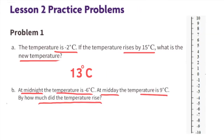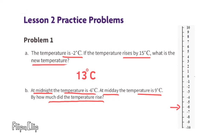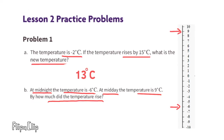Problem 1b: at midnight the temperature is negative 6 degrees Celsius; at midday the temperature is 9 degrees Celsius. By how much did the temperature rise? The temperature was negative 6 degrees at midnight, then positive 9 degrees at midday. The number of units between negative 6 and positive 9 is 15.